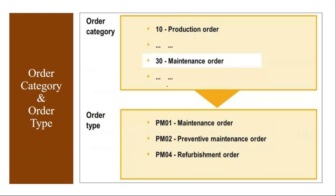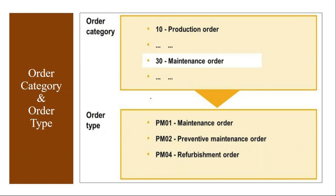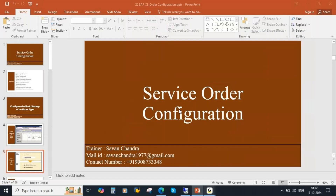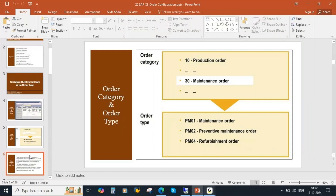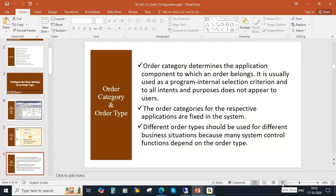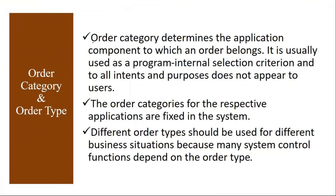Before going into configuration, we need to understand a few terminologies. First is order category and order type. Order category determines the application component to which an order belongs — in which application these orders belong to, that is called order category.